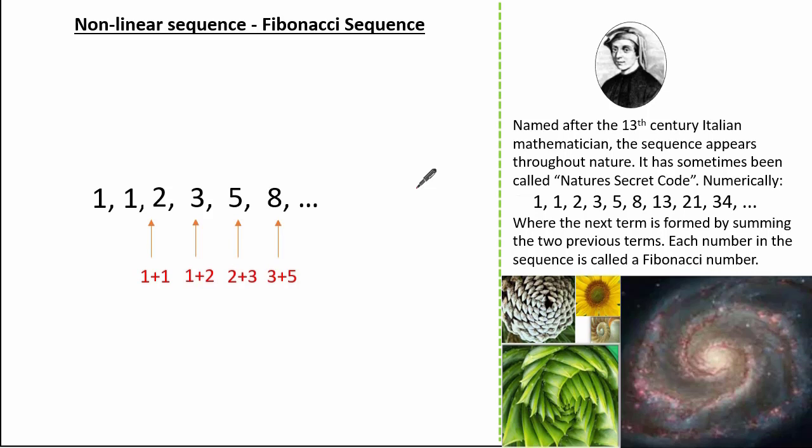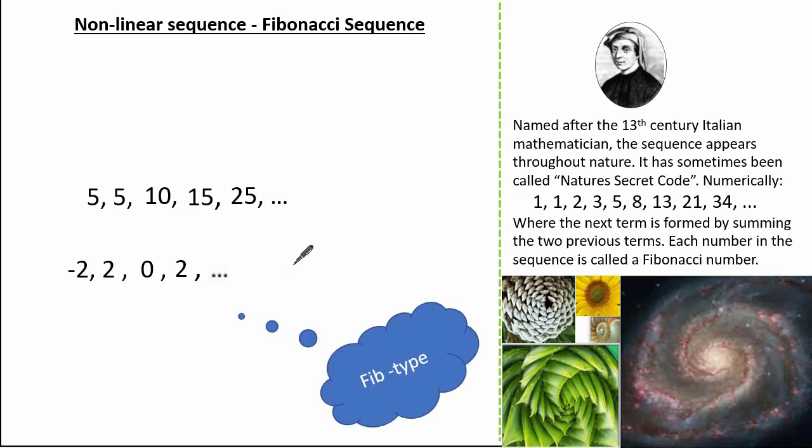There are different types of sequences using the same rule. I'm going to start with two 5's. To make the next term it's 5 add 5 which is our 10. To make the next term it's 5 add 10 to make our 15. To make the next term it's 10 add 15 to make 25. Another type of sequence could be found with these two terms: minus 2 and 2. To make the next term we sum the two previous to make 0. To make the next term we sum the two previous to make 2, and so on and so forth. These sequences are known as Fib-type sequences, but this sequence here is really what Fibonacci is known for.